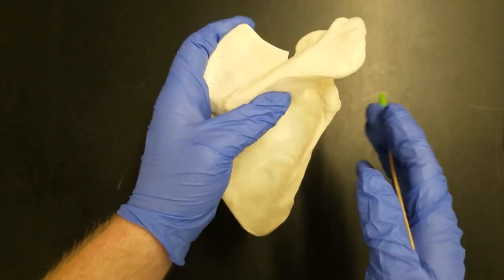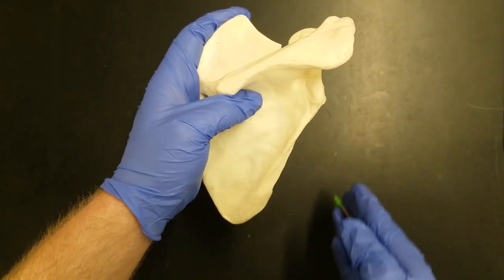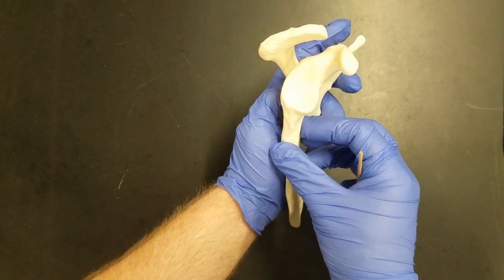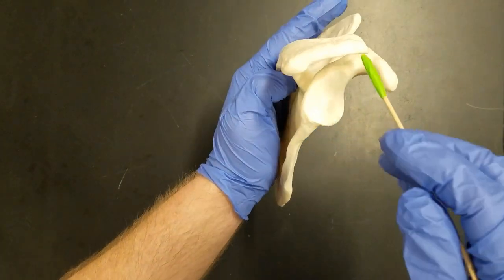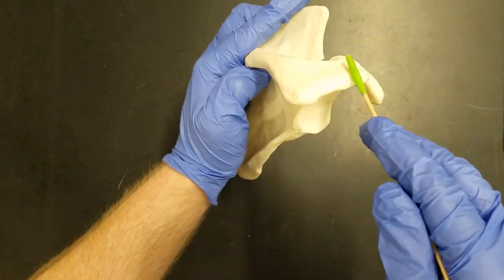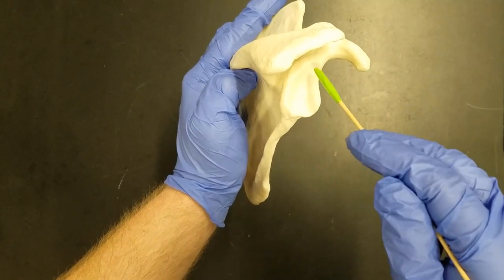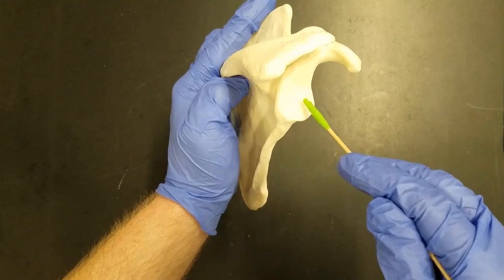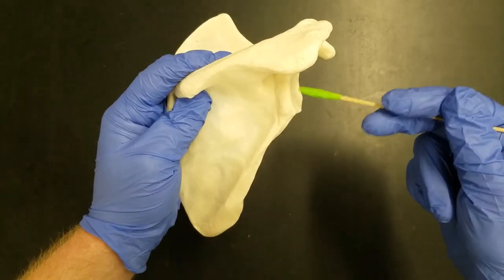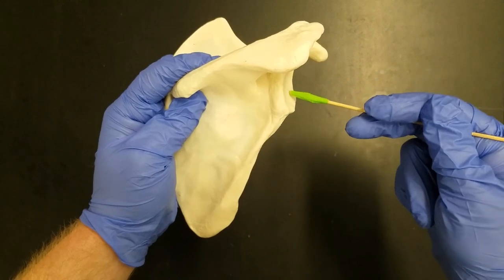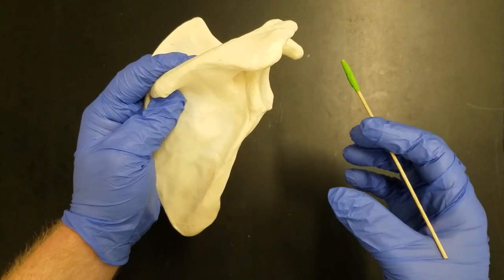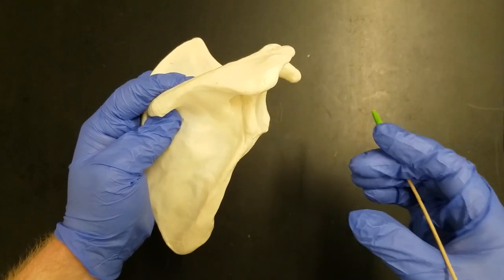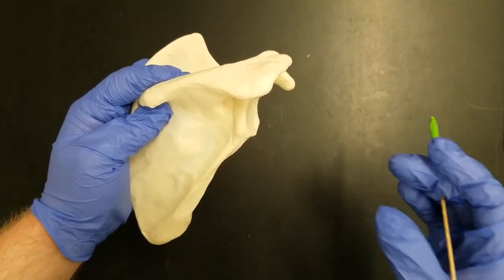Now we're going to turn this scapula to look at the lateral side of it. As we turn the bone, now we're looking at the side that points out towards the upper limb. Here we can see our acromion, and notice how below the acromion we have this depressed area. This is the glenoid cavity or glenoid fossa. The glenoid cavity serves as the socket in the ball and socket joint that forms the shoulder. In fact, the word glene in Greek means socket, so glenoid is socket shaped.